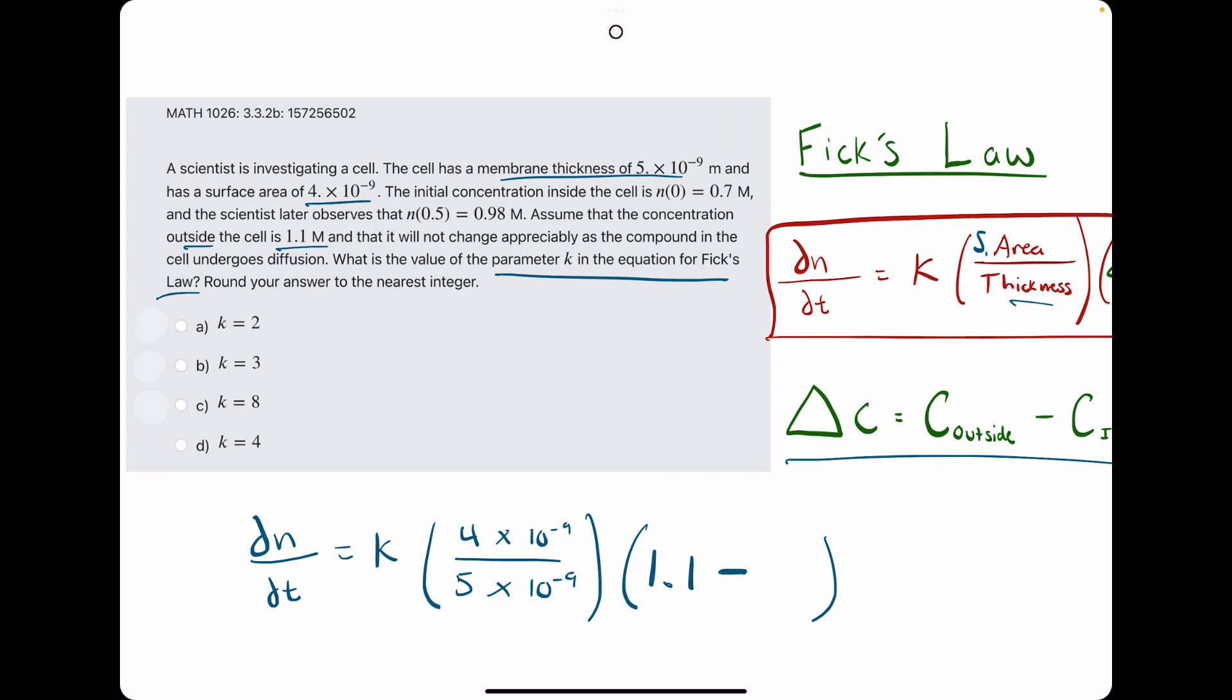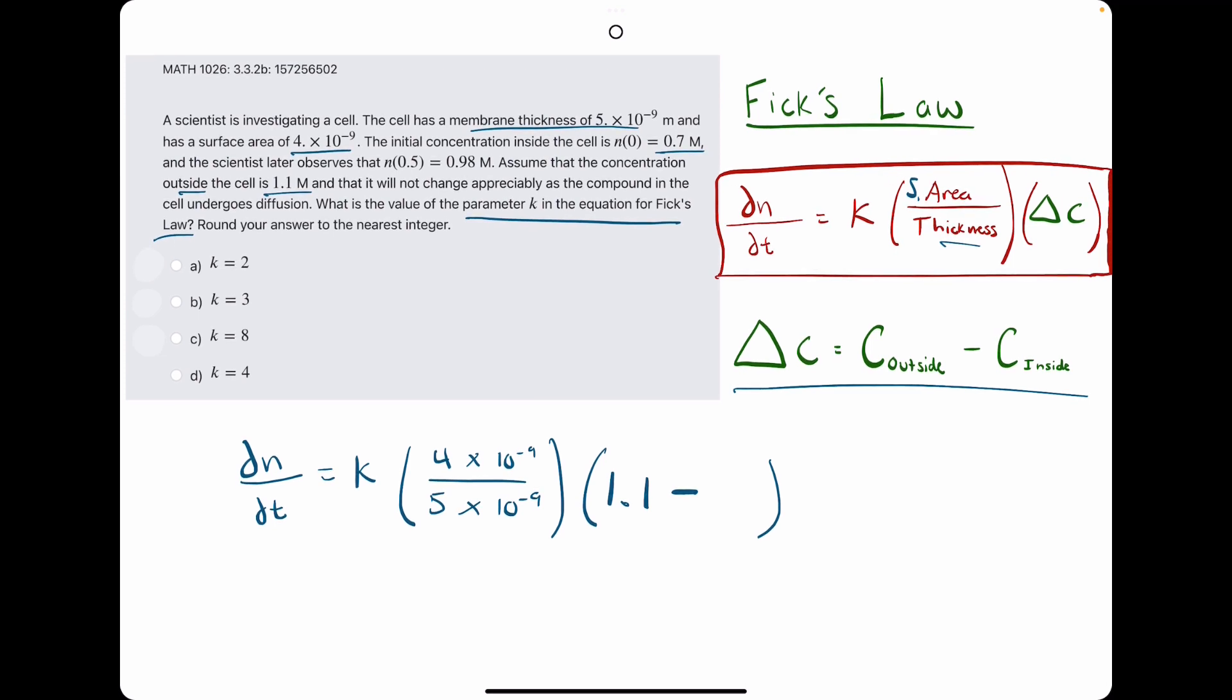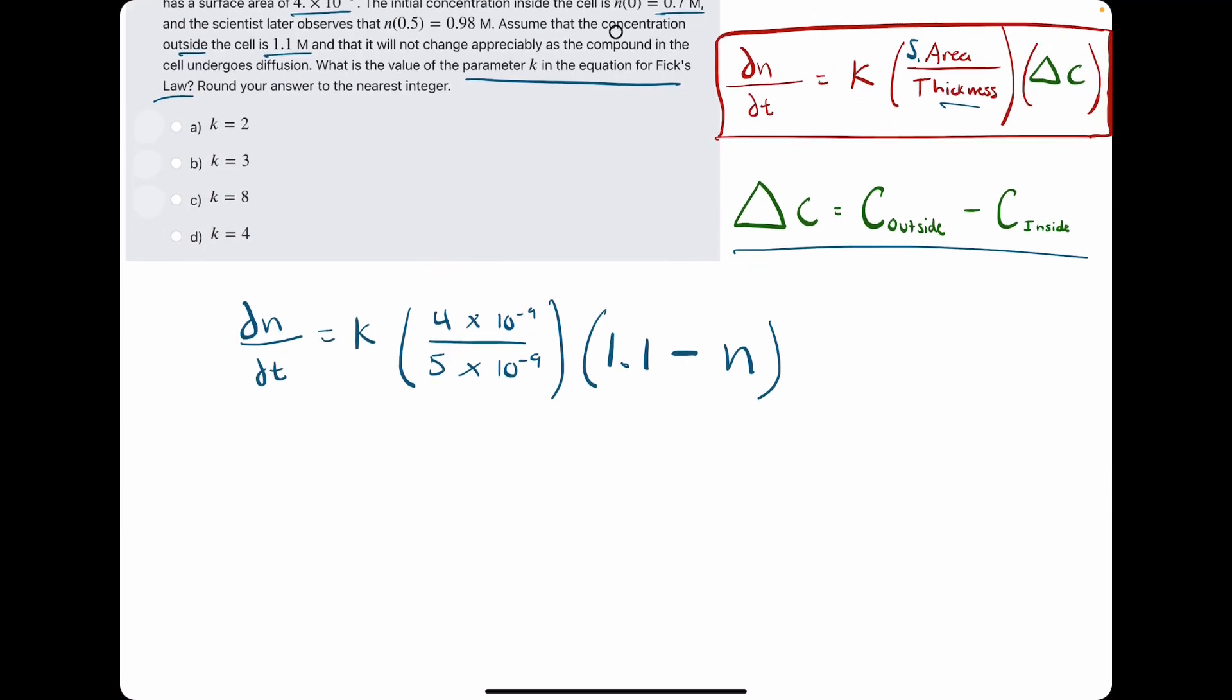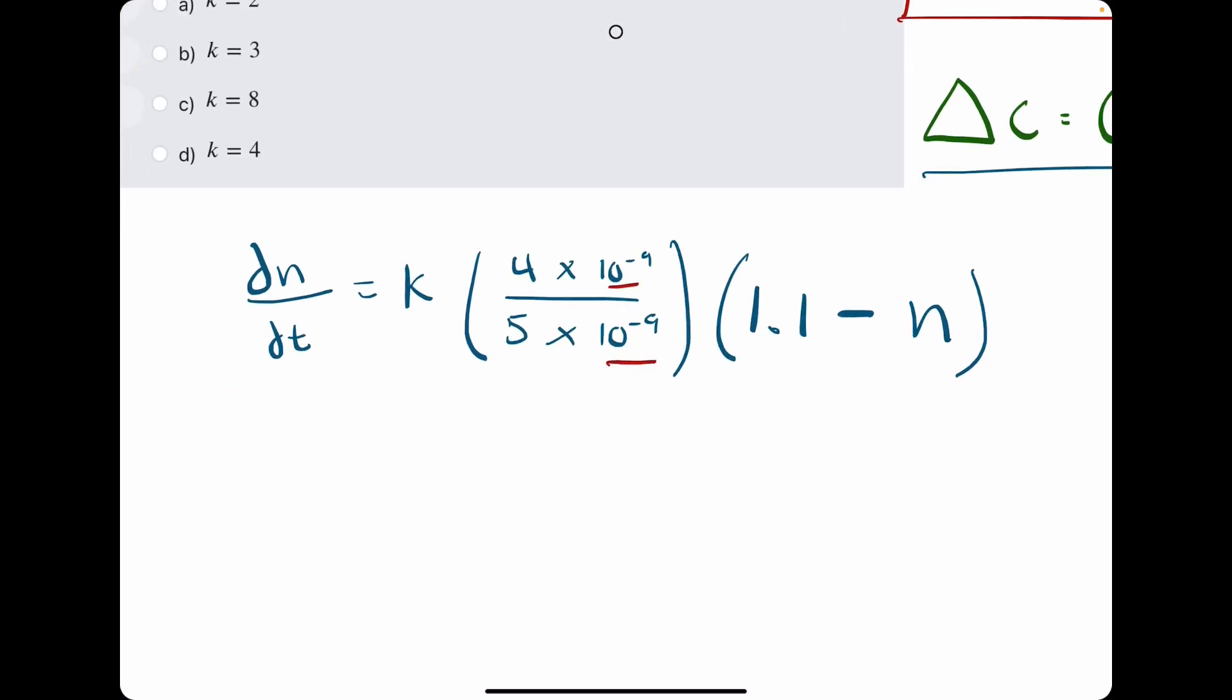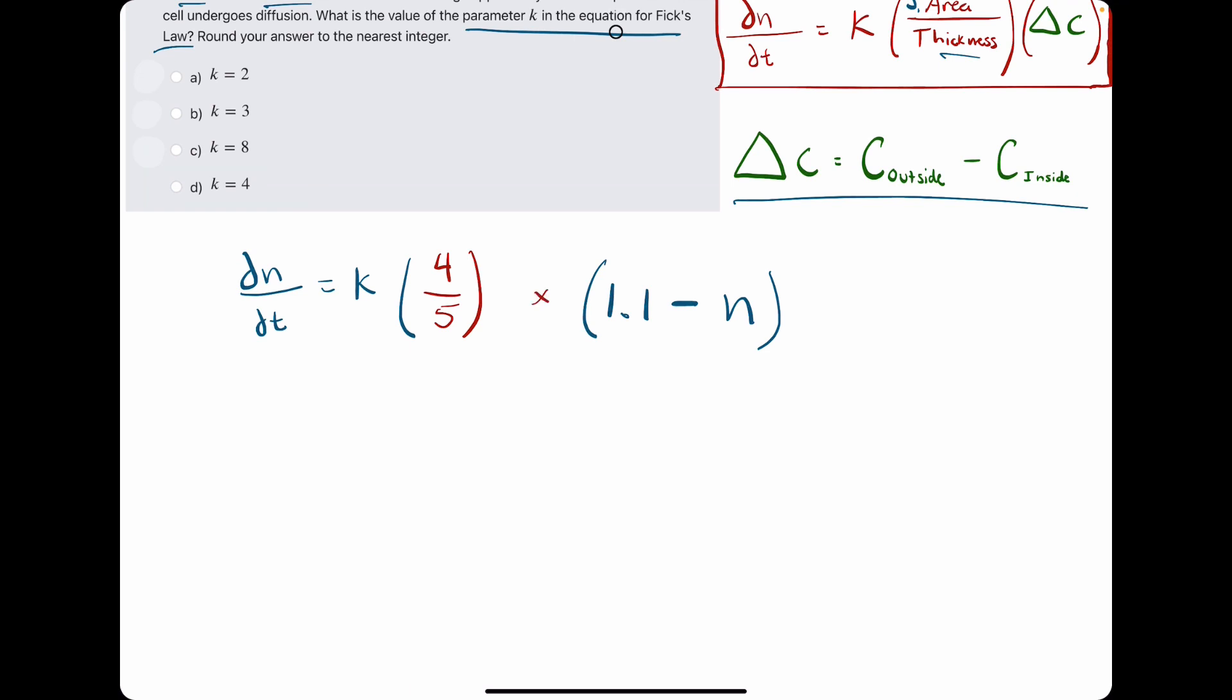They tell us that the concentration inside the cell is something at one point and then it changes to something else at a later point. And so because this concentration is changing inside the cell, we will have to represent it as n. In other words, n overall, the solution we will find should be an equation representing the change of concentration. So let's talk about what we can do here first before trying to solve the differential equation. We have 10 to the negative 9 over 10 to the negative 9. These can cancel, leaving us really with just 4 fifths. So we just have k times 4 fifths times 1.1 minus n.